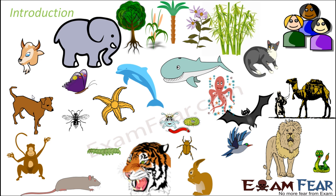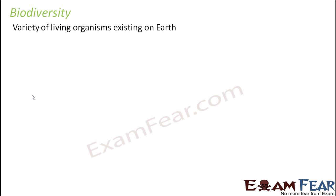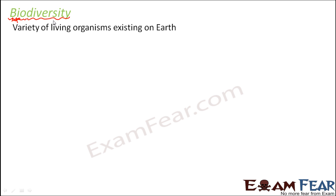With this brief introduction, let us get into the very basics. What is biodiversity? As I mentioned, it is the variety of living organisms existing on earth. The word biodiversity is made up of two parts: bio, which means life, and diversity, which means variety. That is why biodiversity is the variety of living organisms which exist on earth.